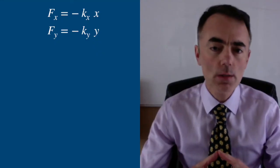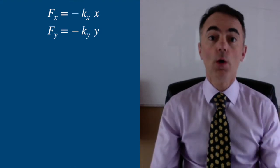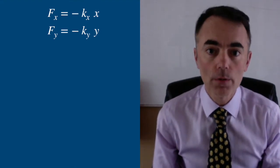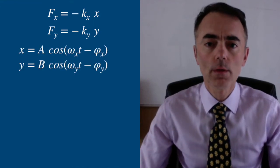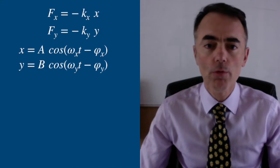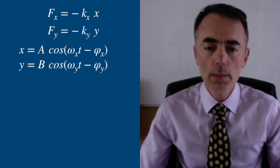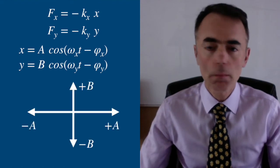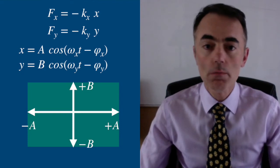But let's now consider that an object is under two recovery forces, one per axis, where the recovery constants are different. This will imply that the frequencies of the motions on each axis are different. So the solutions are written this way. This is just a more general case than the one before. The motion of the object will be limited by plus and minus a and plus and minus b — this rectangle limits the motion.